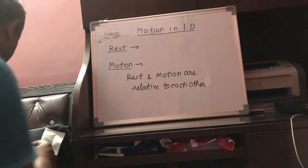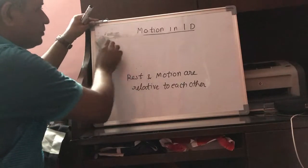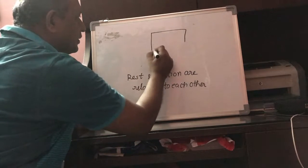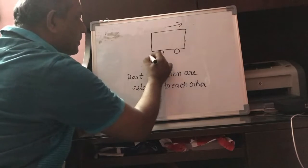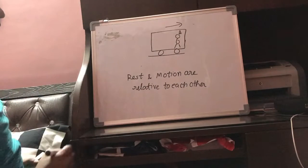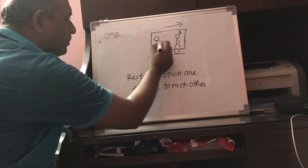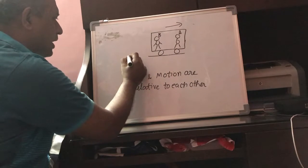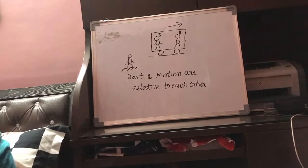Let us understand this with an example. Suppose there is a bus compartment which is in motion with respect to the ground. There is a person A who is inside this compartment, and there is another person B also inside the compartment. There is another person C on the ground who is observing these two people.